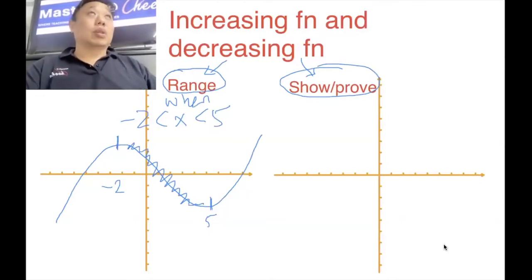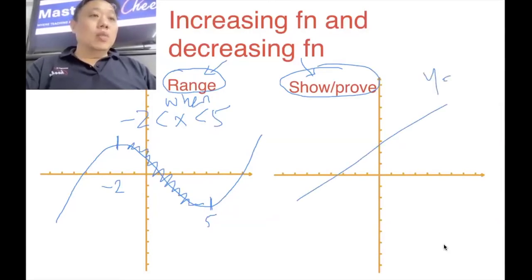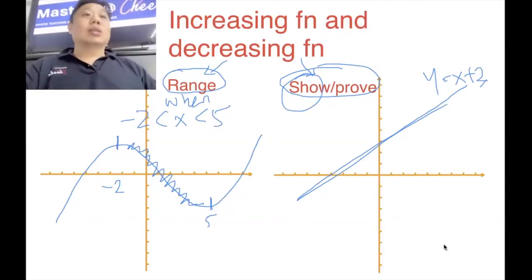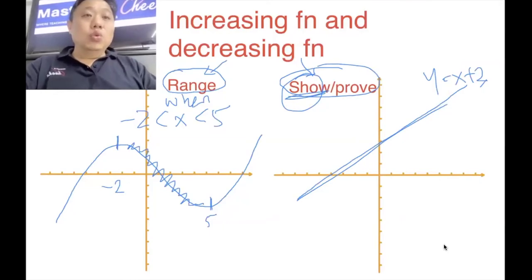The next kind of question is a show question. This is something like we wish our bank account will only increase and not decrease. For example, if we have y equals x plus three, this graph is an always-increasing graph. So I want you to show that it is always going to increase and not decrease. So we call this a show question. So how do we show, and how do we find the range? We are going to cover these two kinds of questions.